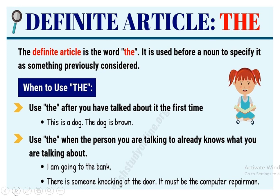Let us now understand the definite article. 'The' is the only definite article. It is used before a noun to specify it as something previously considered — for example, 'the boy' means a boy about whom I have already spoken. When to use 'the': first, we use it after we have talked about something the first time. For example, 'This is a dog. The dog is brown.' The first time I use 'a,' but the second time, that particular dog gets the article 'the.'